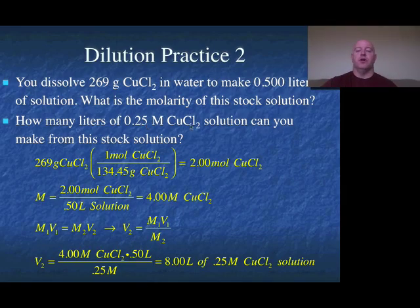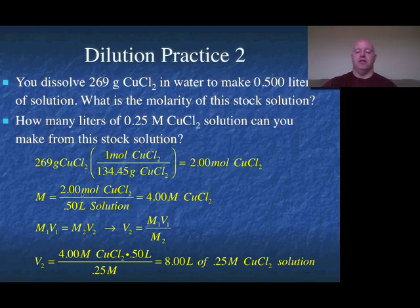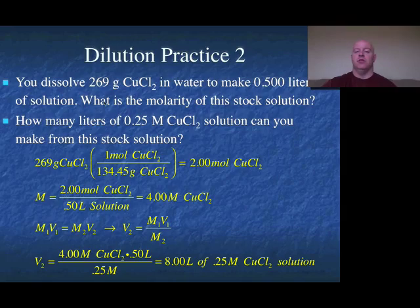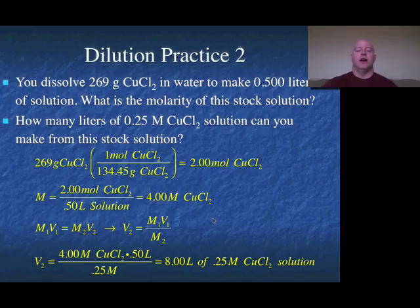For the first part, figure out the concentration of the solution: take your grams, convert to moles, divide by the half-liter volume, and the concentration of the solution we made is 4 molar. That's your stock solution. Now take that 4 molar times the half liter, divided by the 0.25 molar target concentration, and that tells us we can make 8 liters of the diluted solution. If you wanted to make 10 liters, you wouldn't have made enough — you'd have to either add more mass or use more volume with the mass to get a larger or more concentrated stock solution.